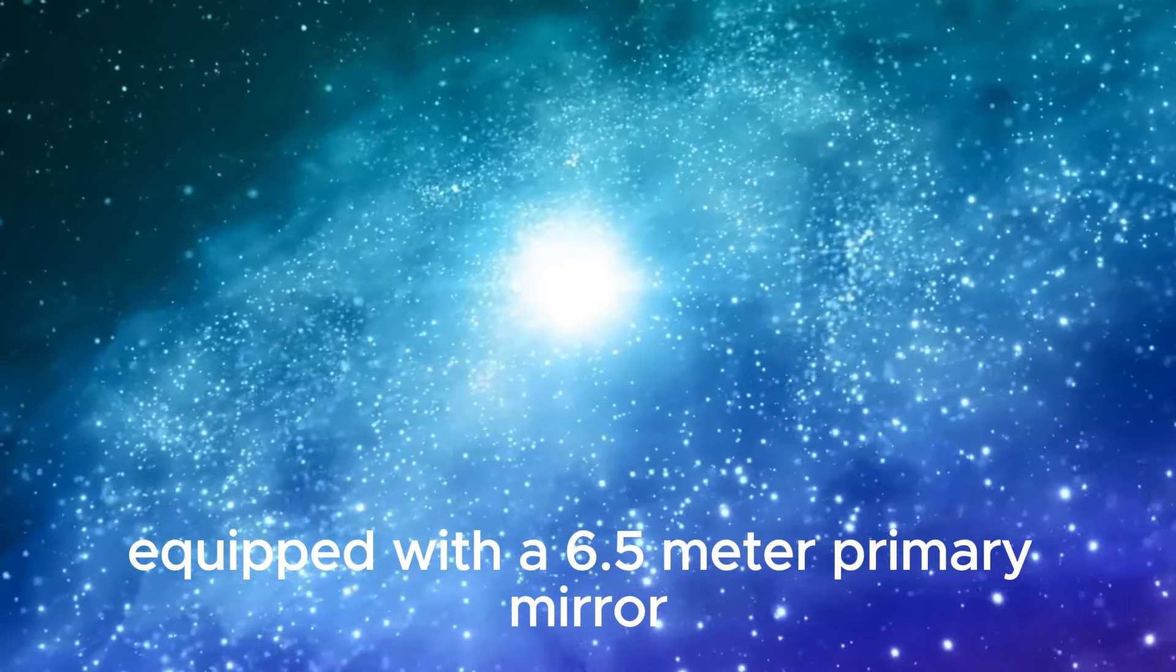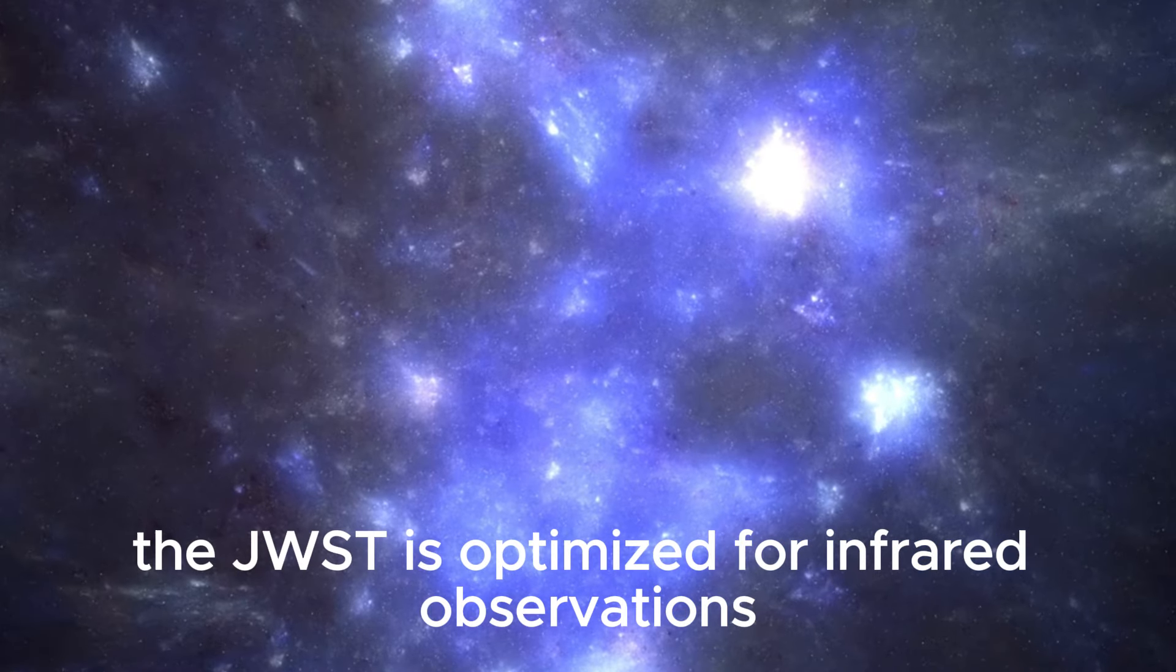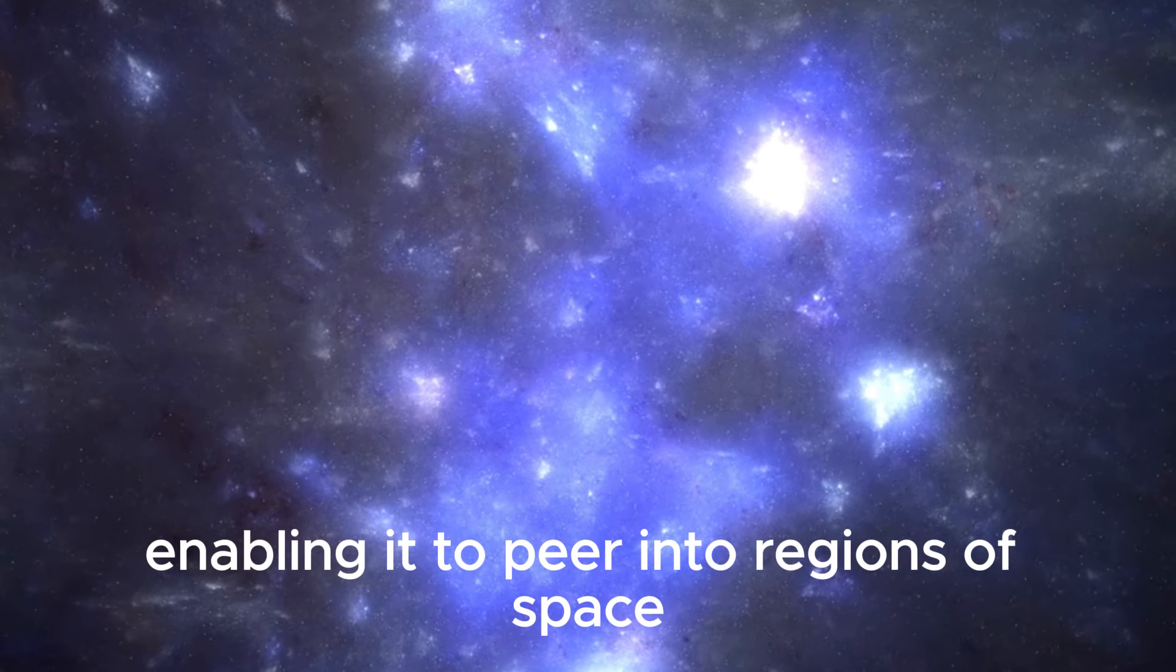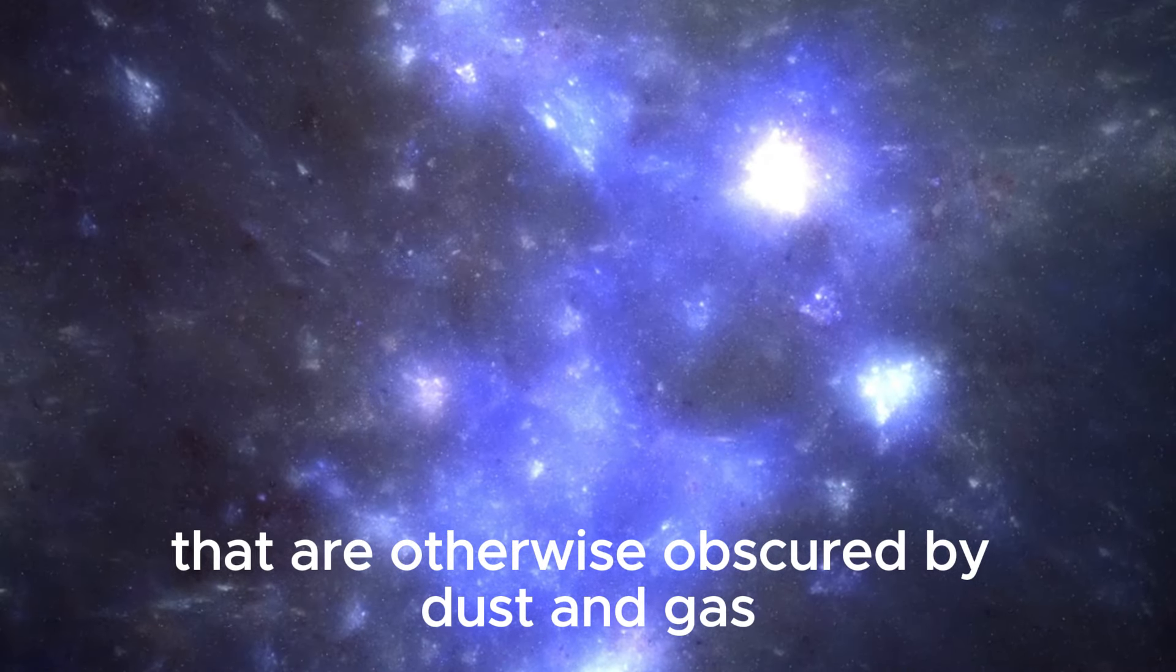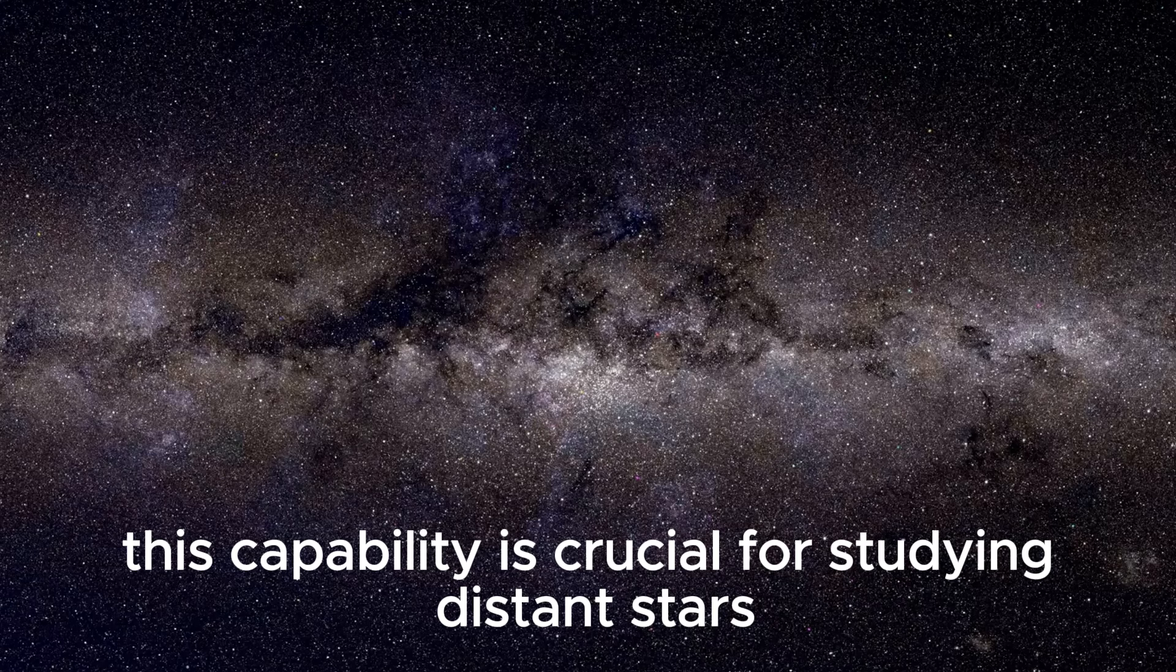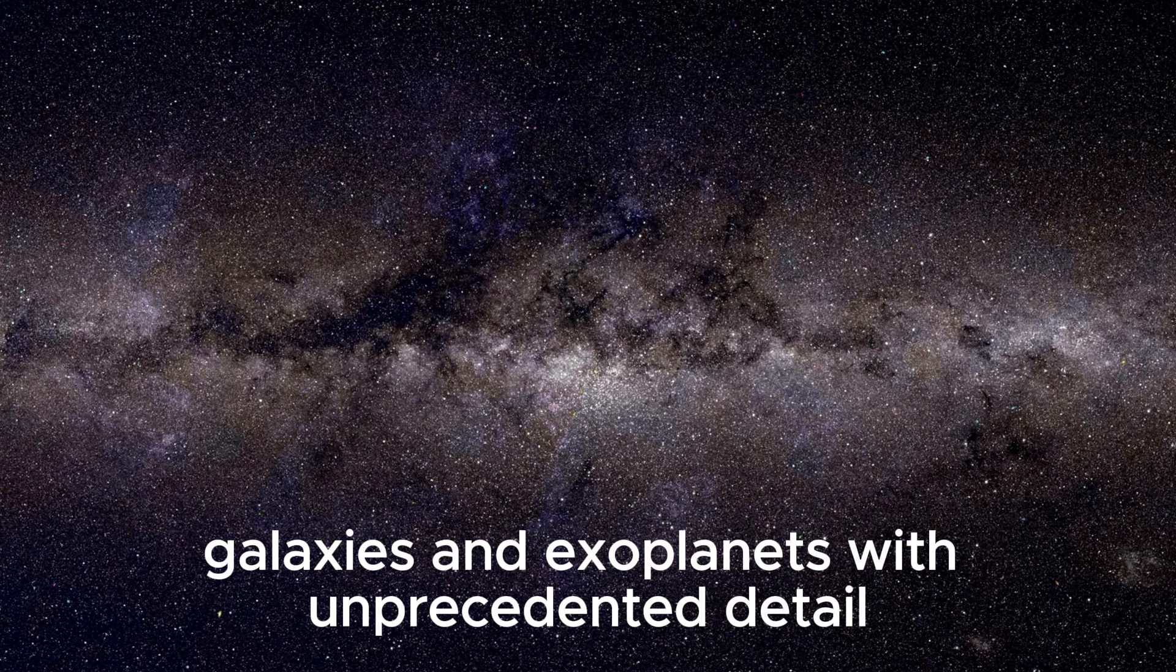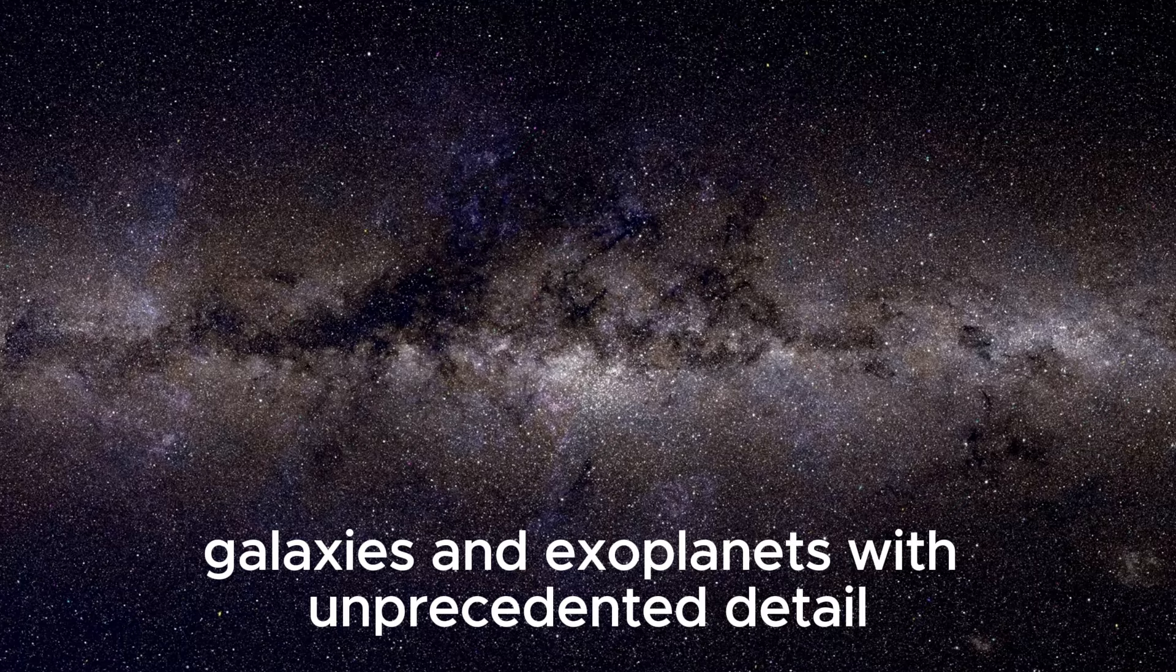Equipped with a 6.5-meter primary mirror, the JWST is optimized for infrared observations, enabling it to peer into regions of space that are otherwise obscured by dust and gas. This capability is crucial for studying distant stars, galaxies, and exoplanets with unprecedented detail.